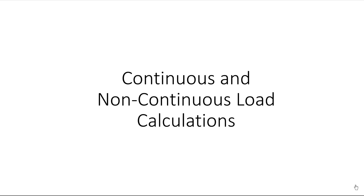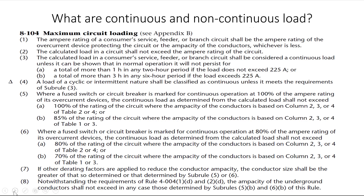Today we will be working on how to size conductors for both continuous and non-continuous loads. First, let's look at the code rules that help us decide if a load is continuous or non-continuous. Rule 8-104, Subrule 3 tells us that a load shall be considered continuous unless it can be shown that under normal operation it will not persist for more than one hour in a two-hour period. So every load is a continuous load unless we can prove it will only operate for a specific amount of time.